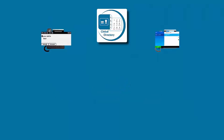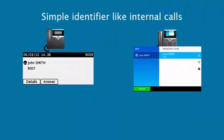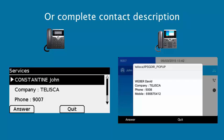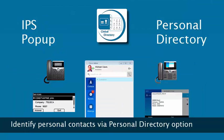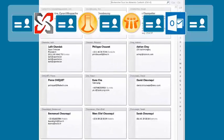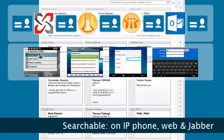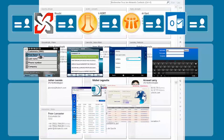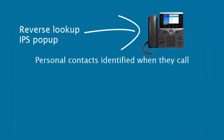Reverse Lookup can be a simple identifier similar to an internal call, or a more complete contact description. It can also identify your personal contacts. This is provided by the Personal Directory option. With Personal Directory, your personal contacts are added to Global Directory — they can be searched on the IP phone and via the web and Jabber directories, and they are identified when they call you.